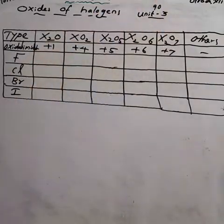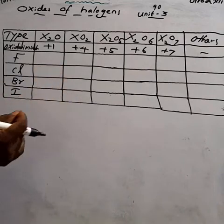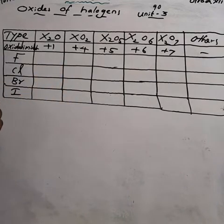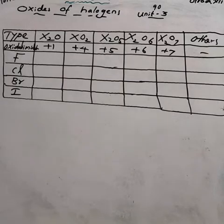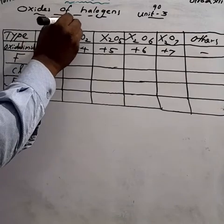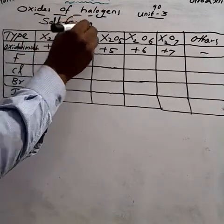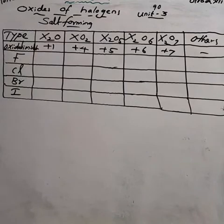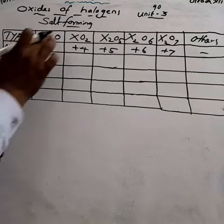What are halogens? Fluorine, chlorine, bromine, iodine — these are all halogens. 'Halo' means salt, 'gen' means forming. So, salt-forming elements are called halogens. The 17th group's elements are called salt-forming elements.